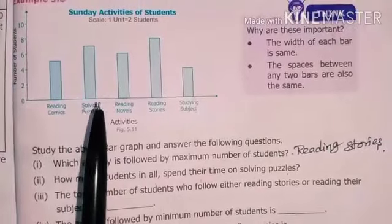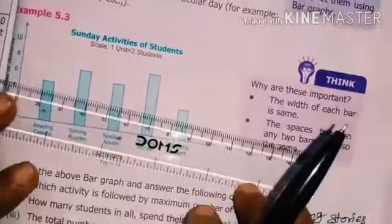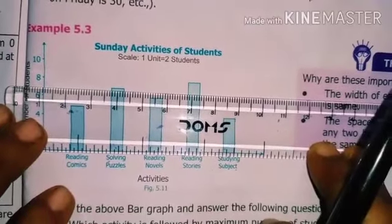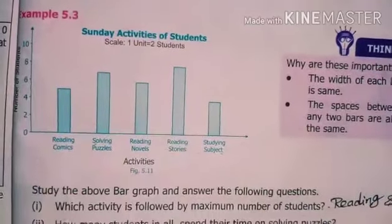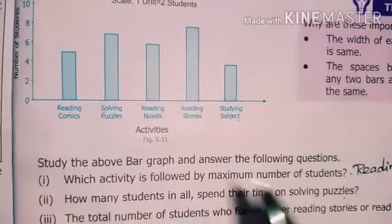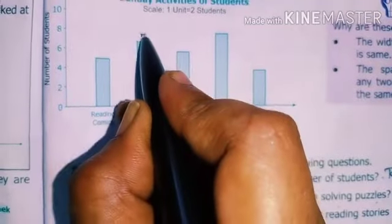Question two: how many students in all spend their time on solving puzzles? Looking at the bar for solving puzzles, it falls between 6 and 8, so the value is 7. Therefore, 7 students spend their time on solving puzzles.